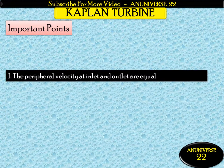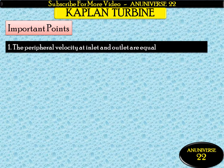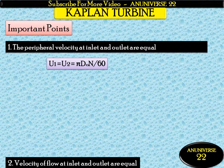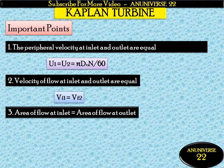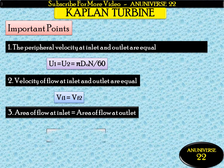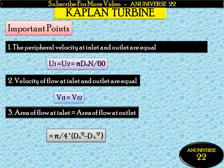In the case of the Kaplan turbine, there are some important points to remember. First is the peripheral velocity: the velocity of the wheel at inlet and outlet are equal, u1 = u2 = (π × D_o × N) / 60. Velocity of flow at inlet and outlet are equal: V_f1 = V_f2. And the area of flow at inlet equals area of flow at outlet, both equal to (π/4)(D_o² − D_b²), where D_o is the outer diameter of the runner and D_b is the diameter of the hub. This is about the Kaplan turbine, which is a reaction turbine with high specific speed and axial flow, because the flow of water is parallel to the axis of the shaft.